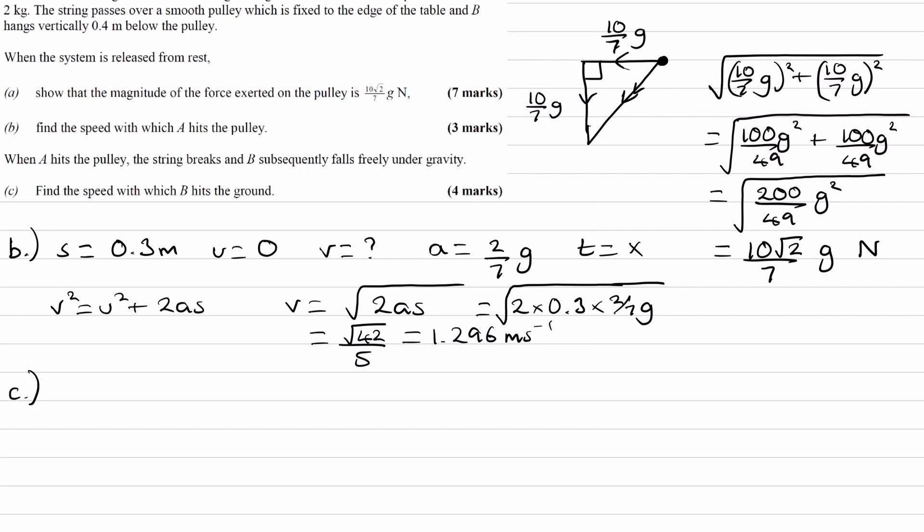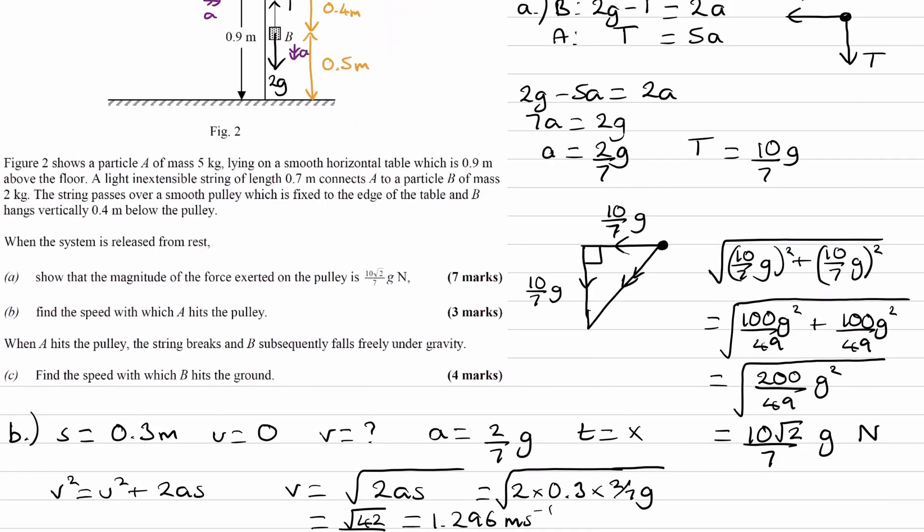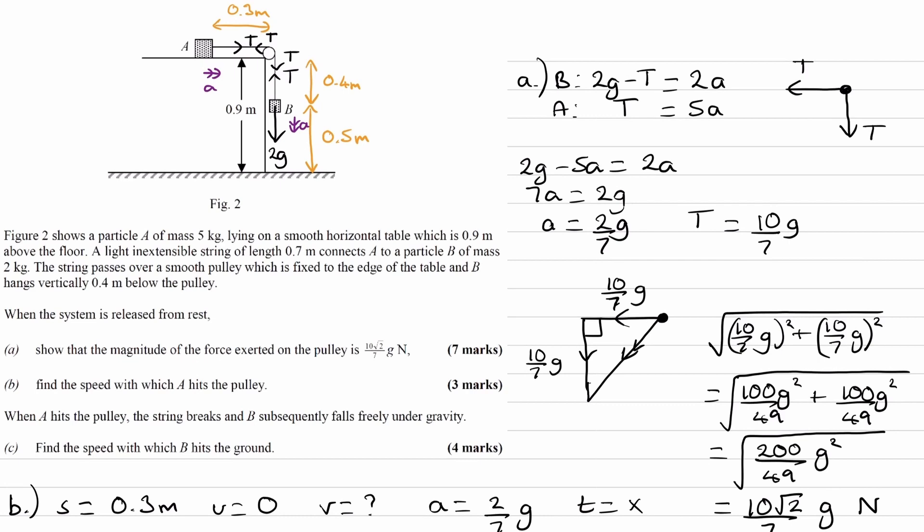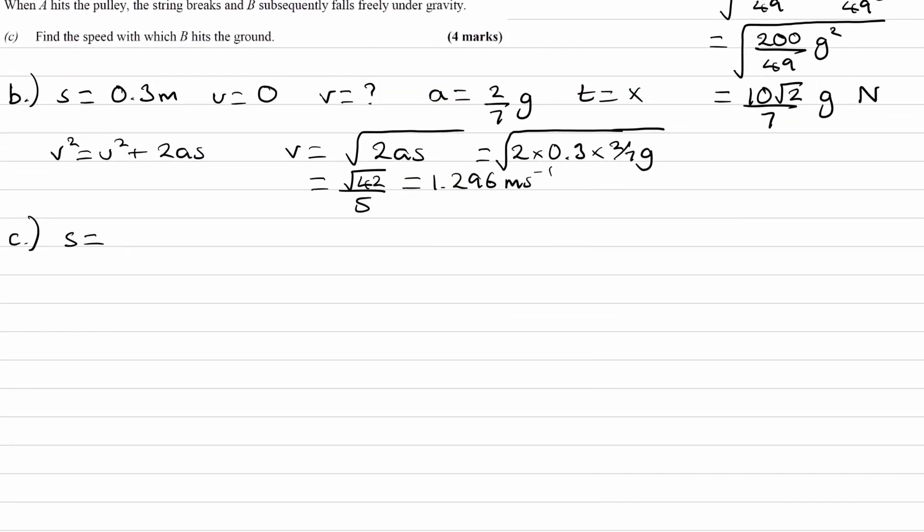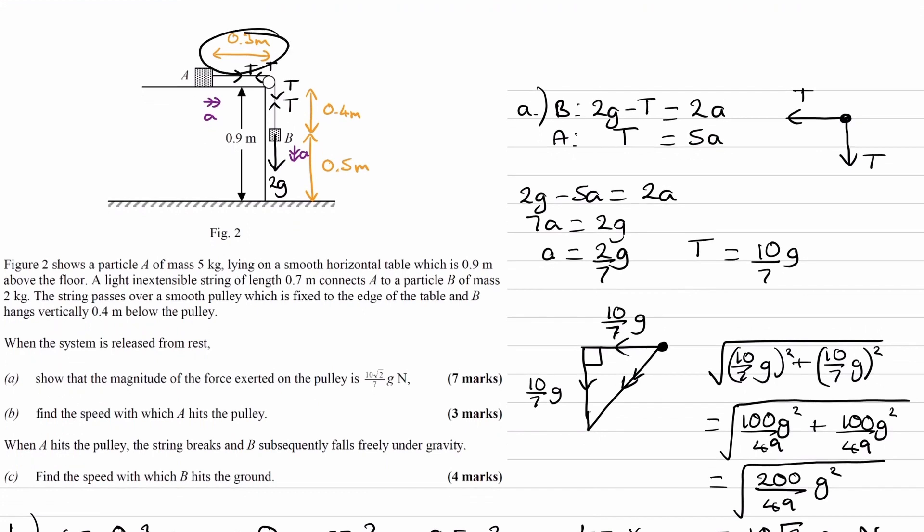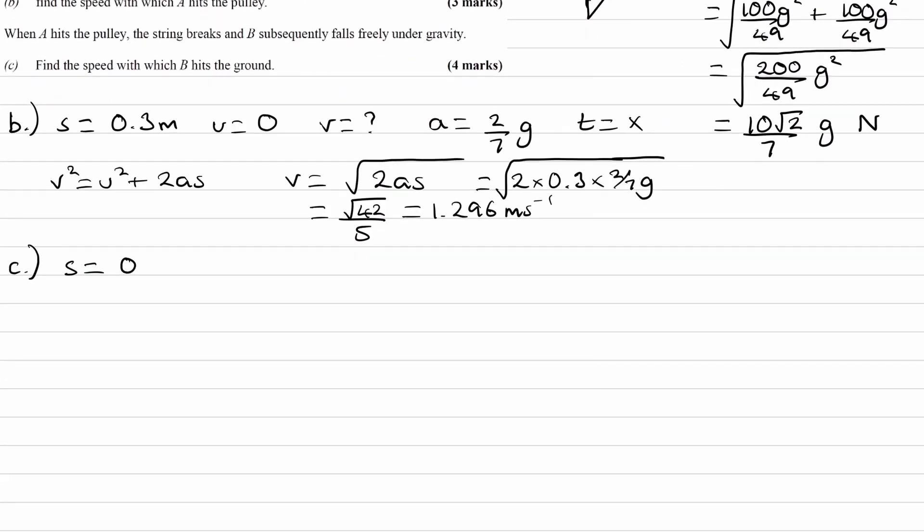For part c, we're finding the speed with which B hits the ground. When A hits the pulley, the string breaks and B falls. We assume the string breaks immediately, so B's speed when A hits the pulley becomes the initial speed for this new stage. Let's write out our SUVAT quantities for this stage. A traveled 0.3 meters, so B has gone down 0.3 meters. Adding this to the initial 0.4 meters, B is now 0.7 meters beneath the pulley, therefore 0.2 meters off the ground. B has a remaining distance of 0.2 meters to fall.